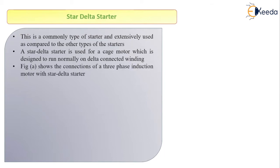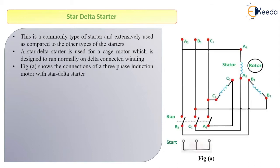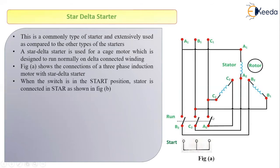Let us see how the star delta starter looks. Figure A shows the diagram for the star delta starter. Here we have the rotor of the induction motor and this is the three-phase stator. This is our changeover switch. The terminals A2, C2, and B2 are the three terminals of our changeover switch.